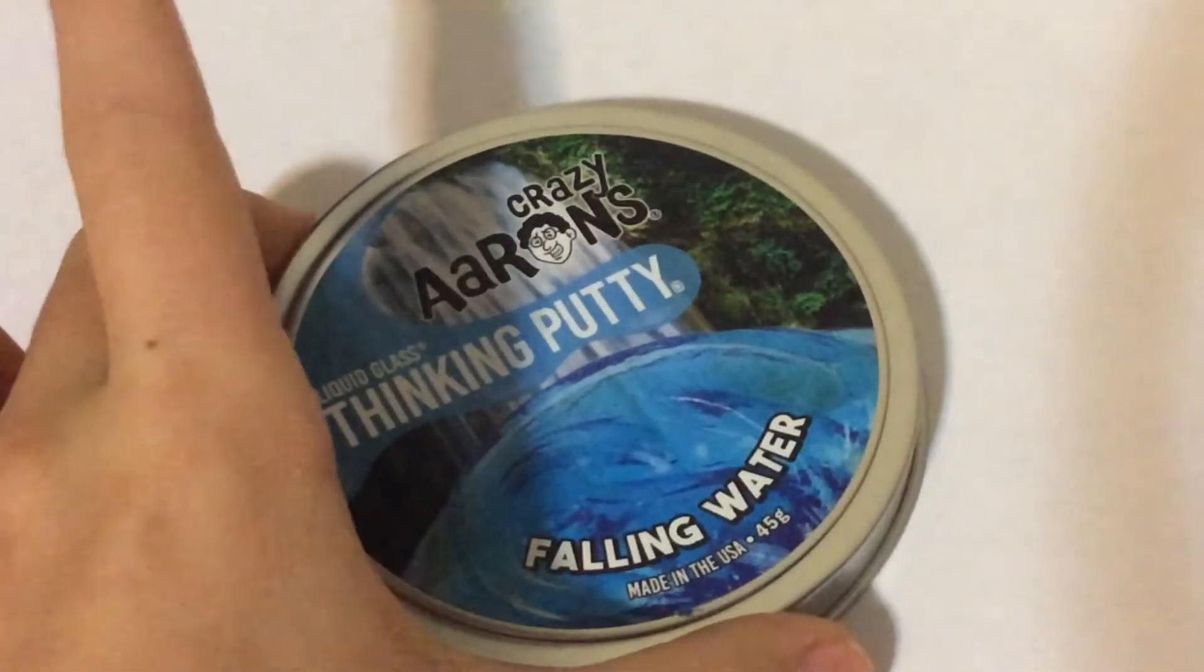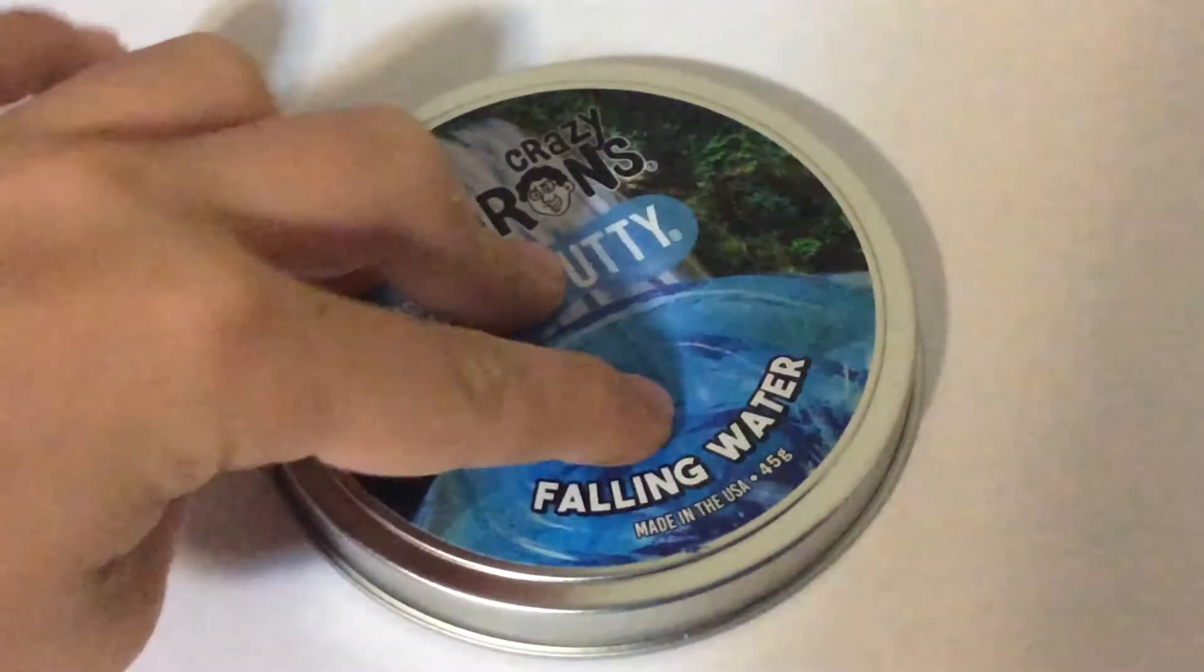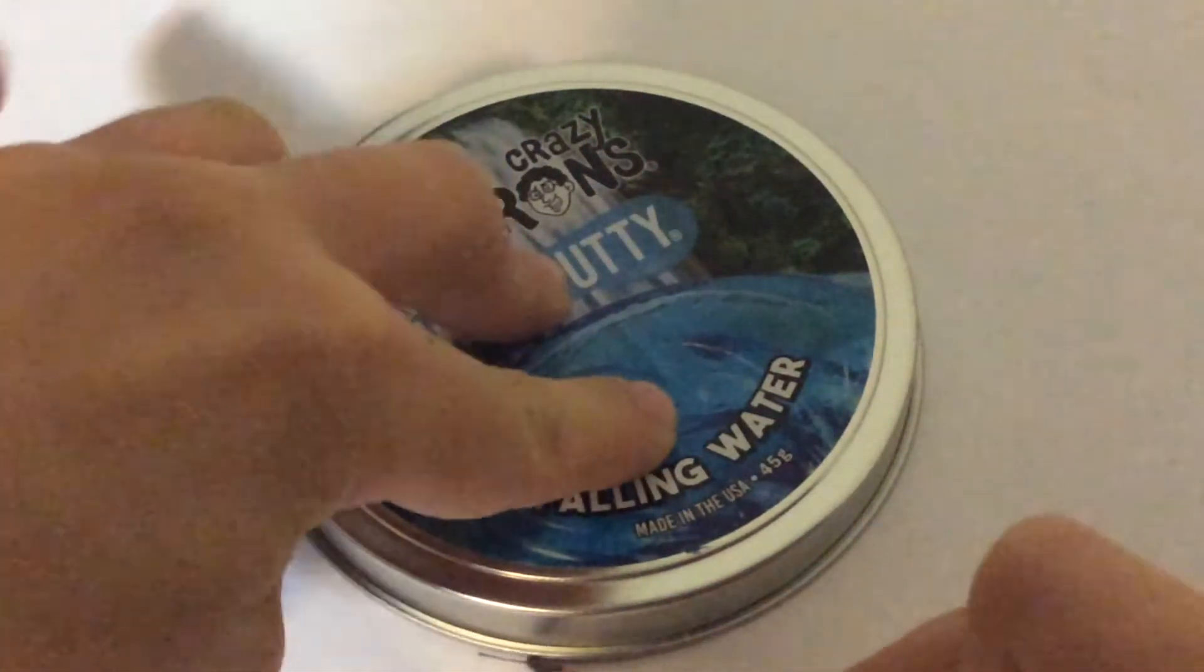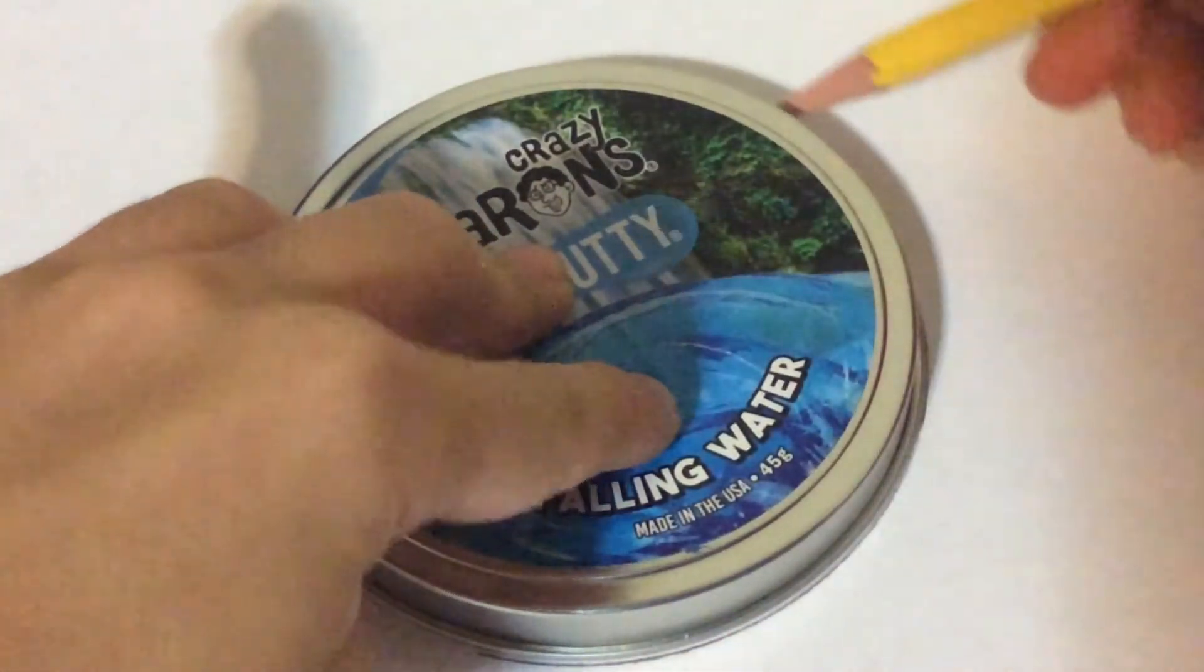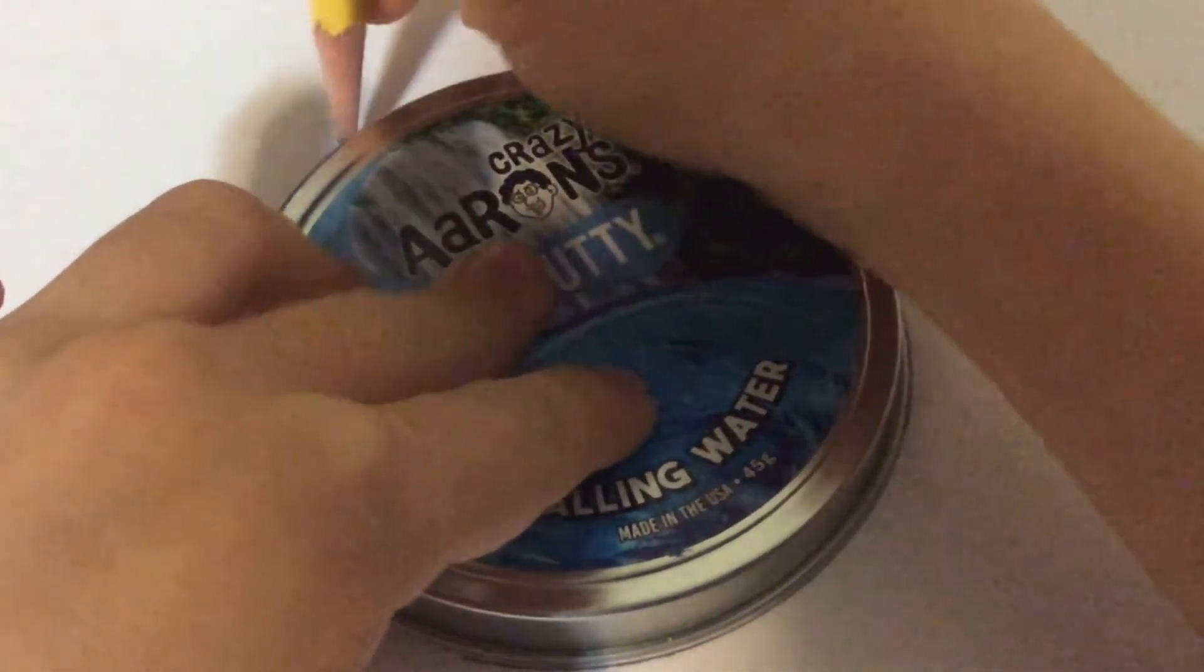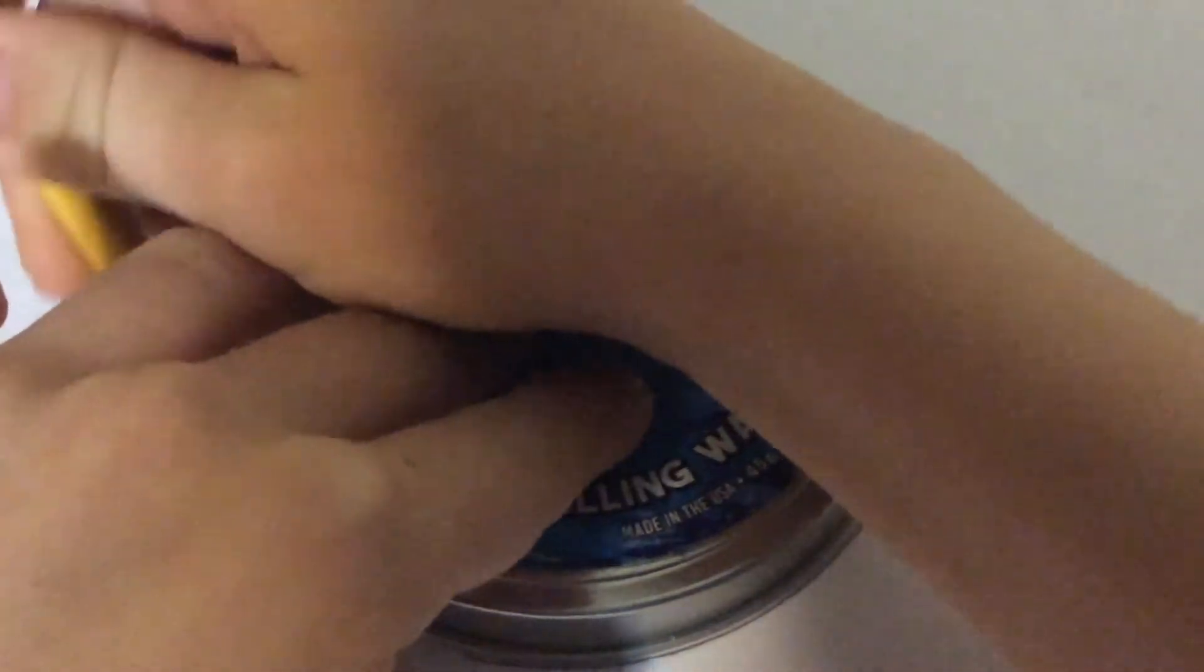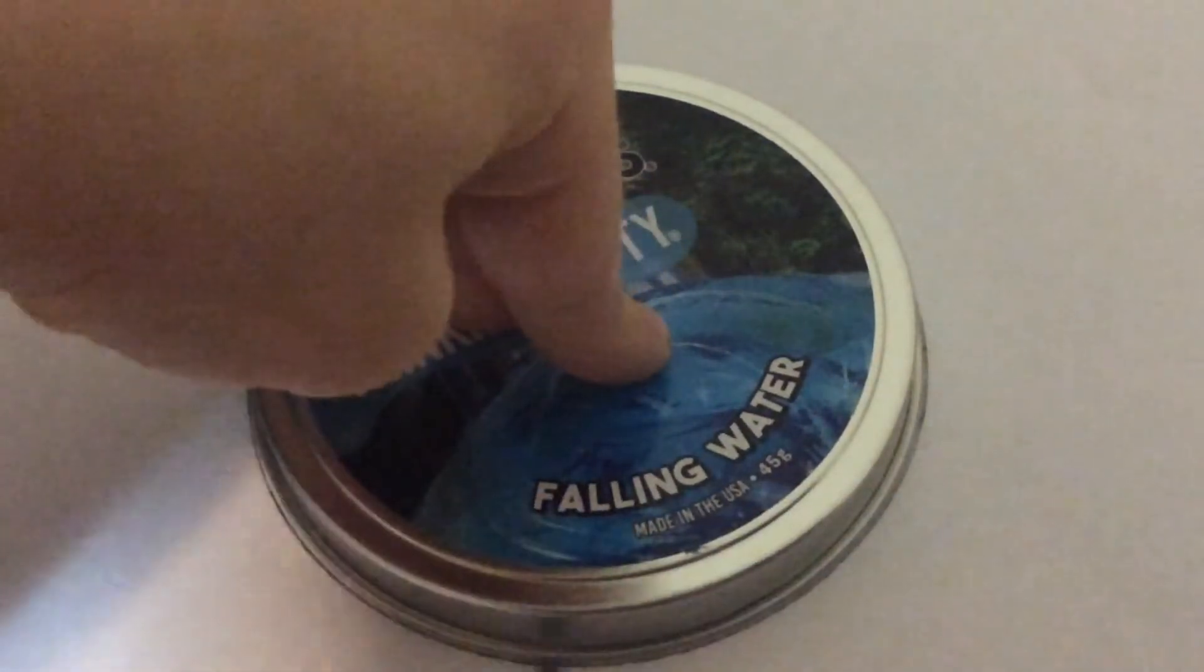And then a pencil and paper. First what you're gonna do is place the thing that you have that is round, whatever it is, and then you're gonna draw around to make a circle. You're gonna put it right like this and go around all the way to the other side.